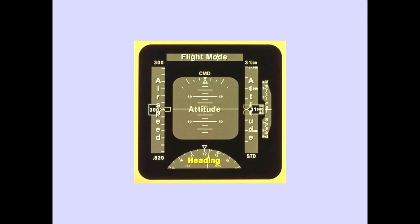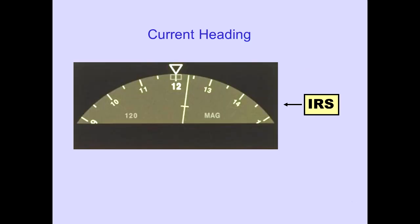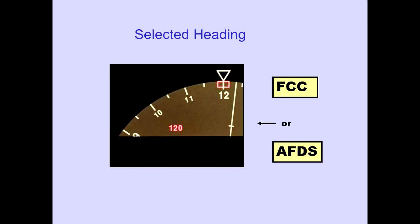Finally, let's look at the heading indication. The heading indication is located on the bottom of the PFD. The current heading is displayed in the center of the arc below the heading pointer. The selected IRS provides this information.